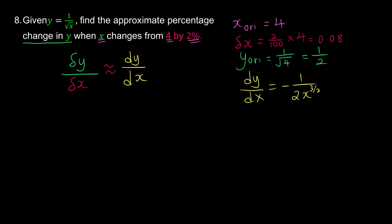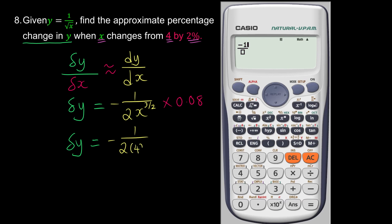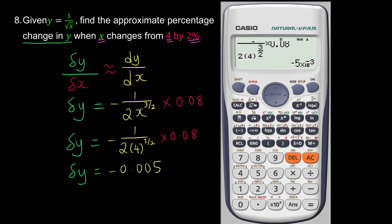Now we have gathered enough information, so let's find delta y. Delta y equals dy over dx times delta x, which is negative 1 over (2x to the power of 3/2) times 0.08. Substituting the original x = 4: negative 1 over (2 times 4 to the power of 3/2) times 0.08. Computing with the calculator gives negative 0.005.